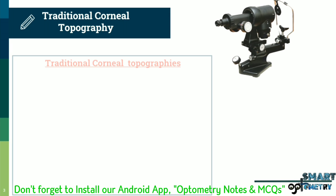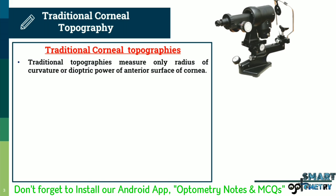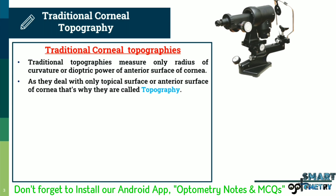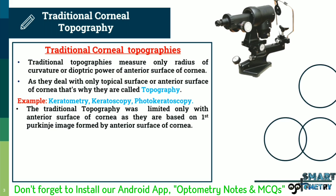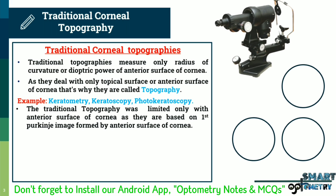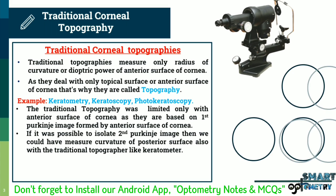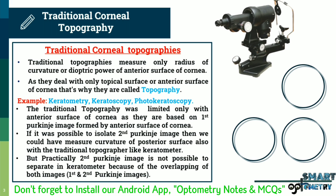Traditional topographies measure only the radius of curvature or dioptric power of the anterior surface of the cornea. As they deal with only the topical or anterior surface of the cornea, they are called topography — for example, keratometry, keratoscopy, and photokeratoscopy. Traditional topography was limited to the anterior surface because it is based on the first Purkinje image formed by the anterior surface. If it were possible to isolate the second Purkinje image, we could measure the curvature of the posterior surface as well. Practically, the second Purkinje image cannot be separated in the keratometer because of the overlapping of both mires, and the second Purkinje image is much dimmer compared to the first.